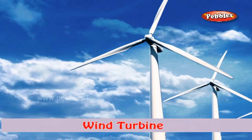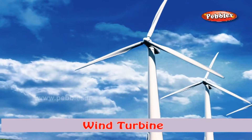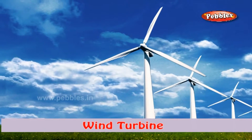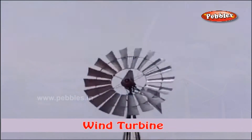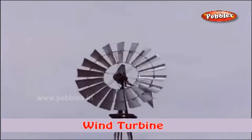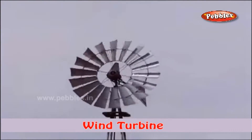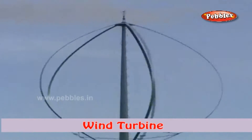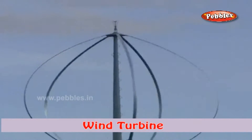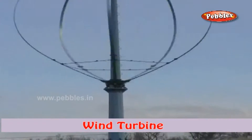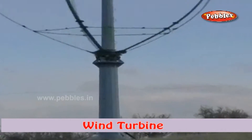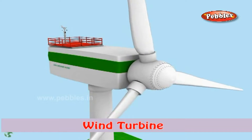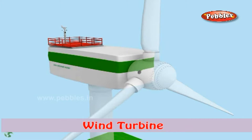There are two types of wind turbines classified based on the axis in which the turbine rotates: horizontal axis wind turbines (HAWT) and vertical axis wind turbines (VAWT). Among these two, turbines that rotate on a horizontal axis are more popularly used than vertical axis wind turbines.